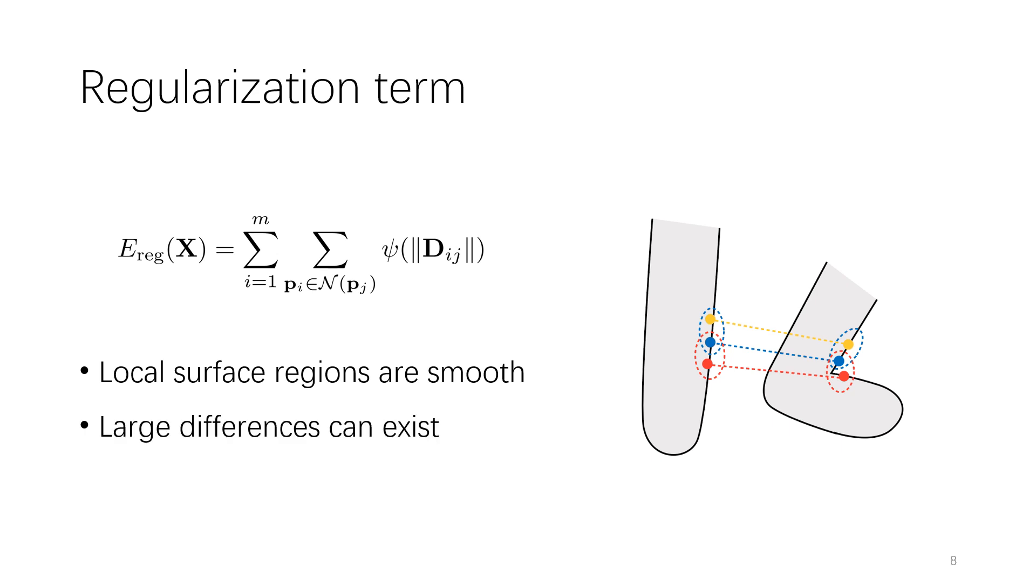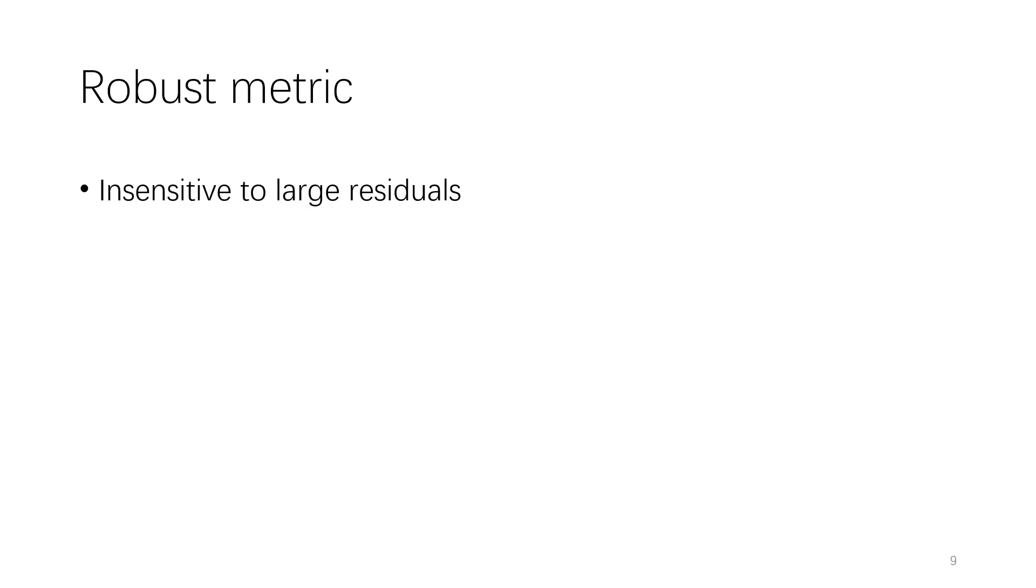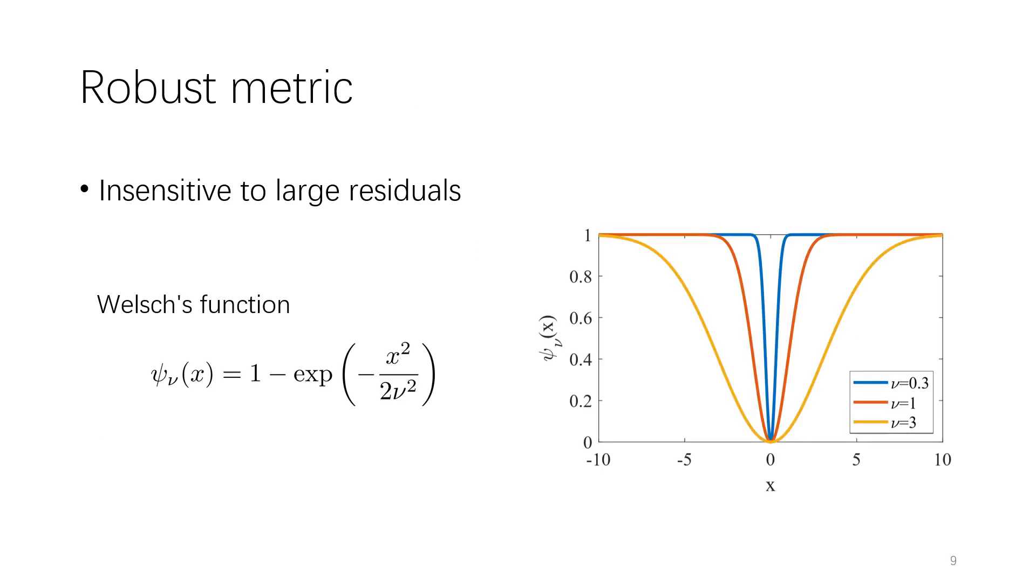However, some regions need to preserve the local features, so the differences can't be too small, such as the positions of blue and red pairs. Therefore, we need a robust metric to measure the residuals of them, and we choose Welsch's function as this metric.